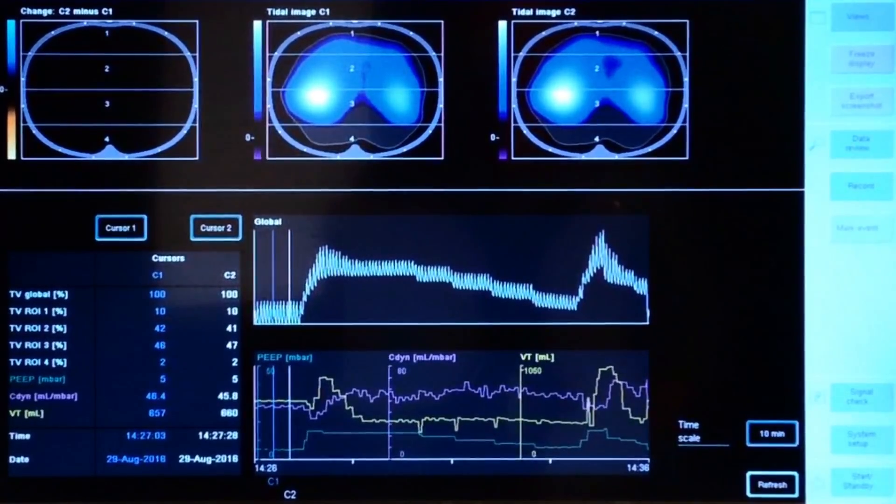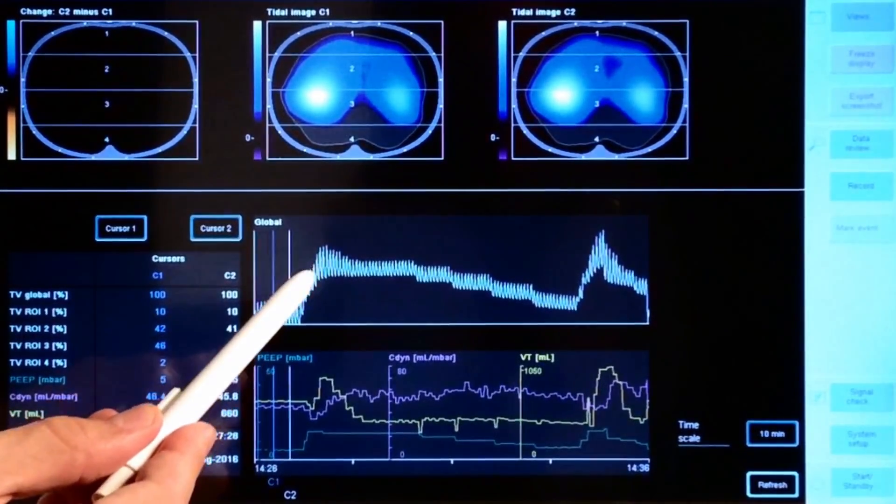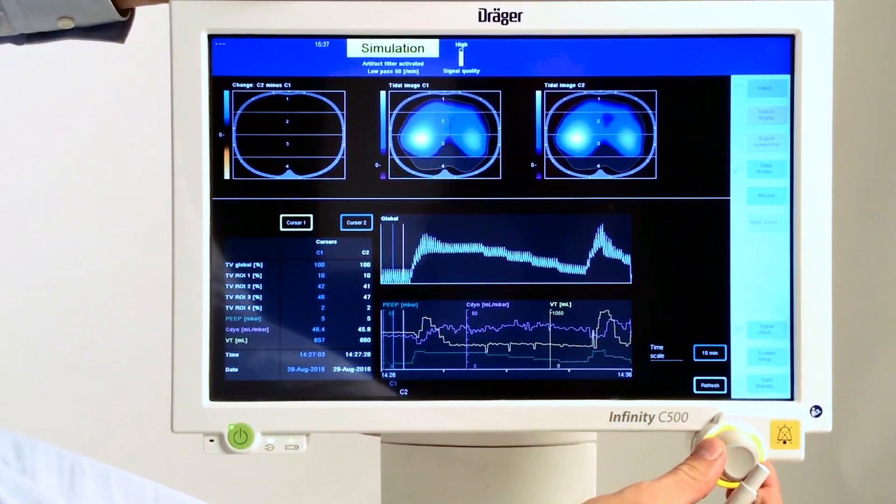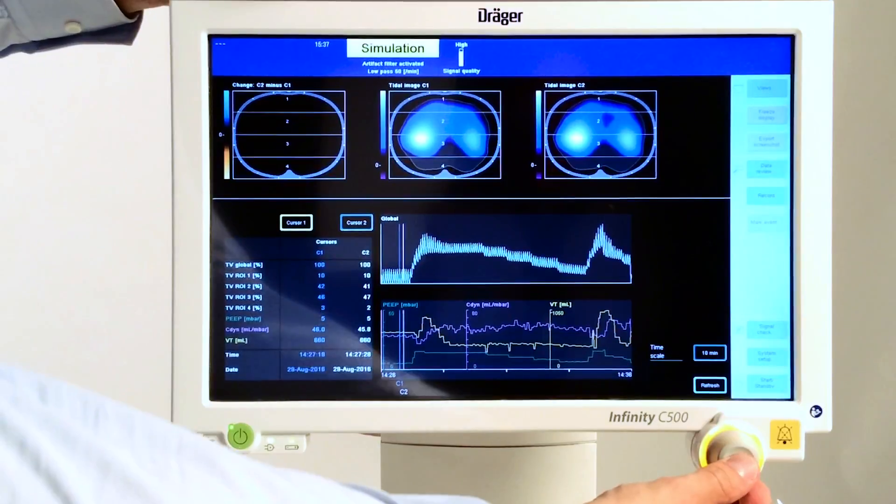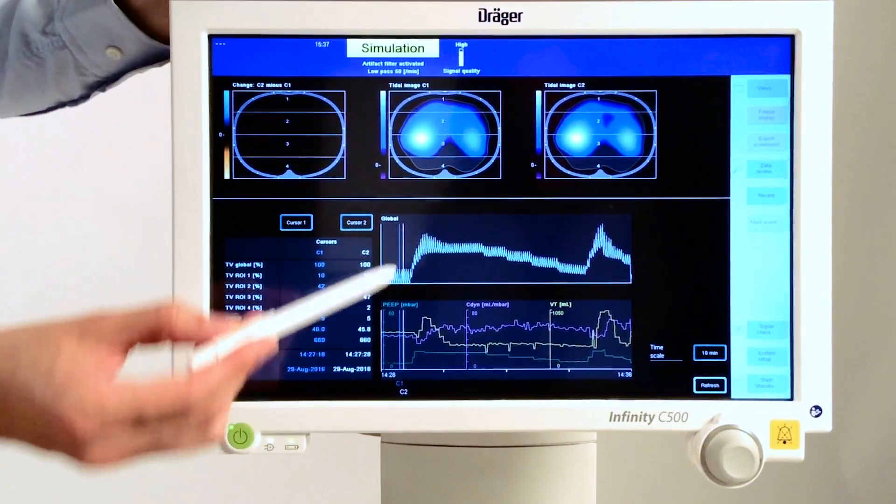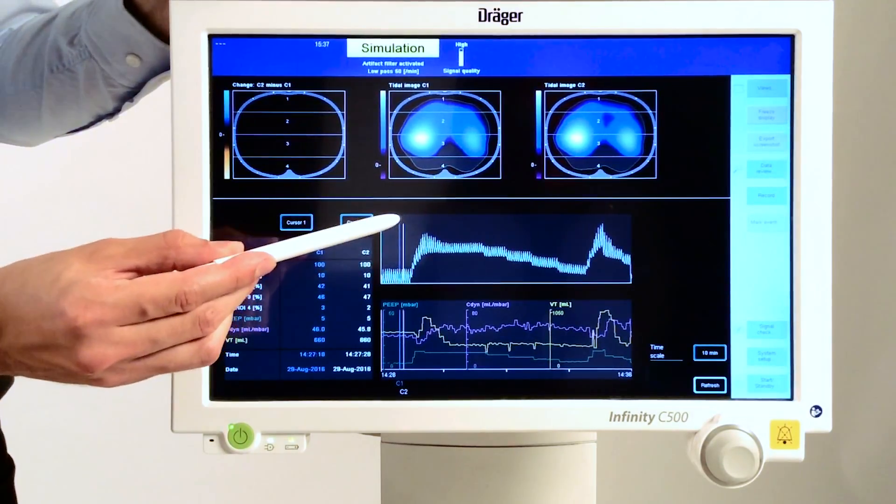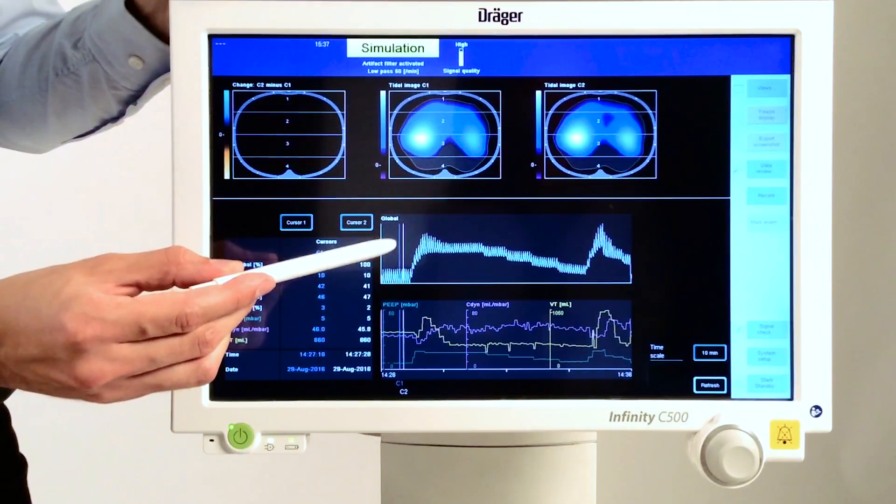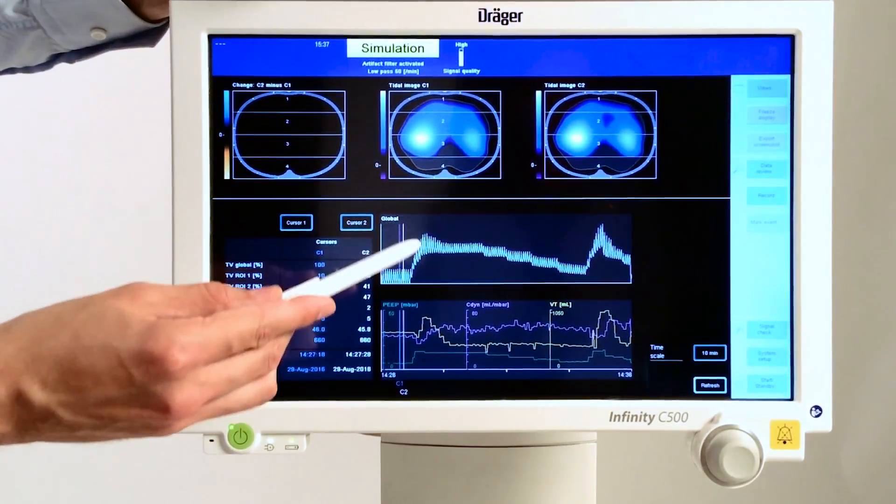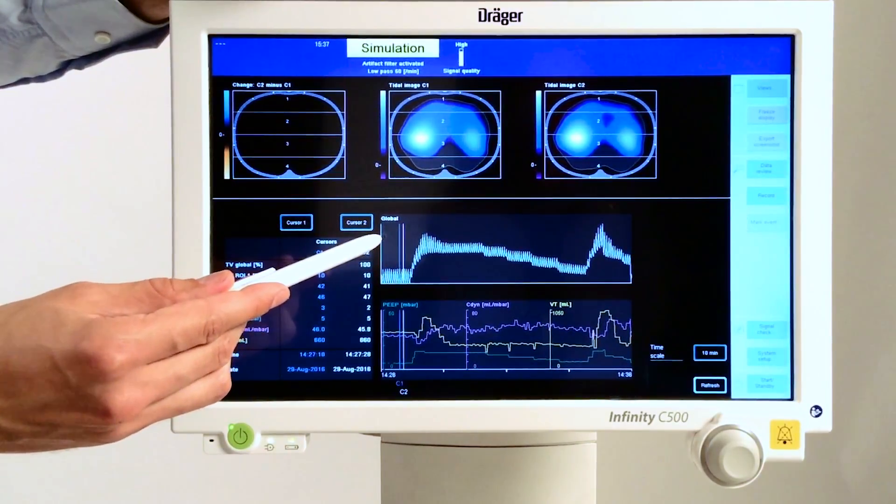First, we set a reference point before the recruitment maneuver, ideally two or three breaths before the beginning. We can also see an amplitude increase in our global impedance curve. This is caused by an increase in delta P, which led to higher tidal volumes during the recruitment maneuver.